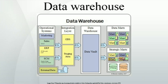Key developments in early years of data warehousing were: 1960s, General Mills and Dartmouth College in a joint research project developed the terms dimensions and facts; 1970s, ACNielsen and IRI provide dimensional data marts for retail sales; 1970s, Bill Inmon begins to define and discuss the term data warehouse; 1975, Sperry Univac introduces MAPPER, a database management and reporting system. It was the first platform designed for building information centers, a forerunner of contemporary enterprise data warehousing platforms.